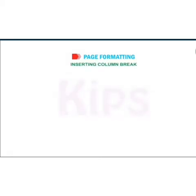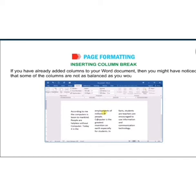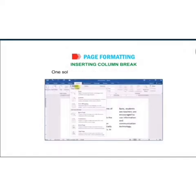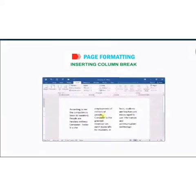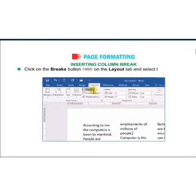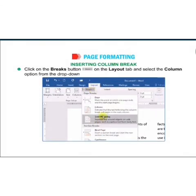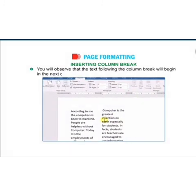Next is inserting a column break. If you have already added columns to your Word document, you might notice that some columns are not balanced as you would like. One solution is to add a column break, which forces the end of a column and moves the text to the beginning of a new column. Place the cursor before the text where you want to insert the column break, click on the Breaks button on the Layout tab, and select the Column option from the drop-down menu. The text following the column break will move to the next column.